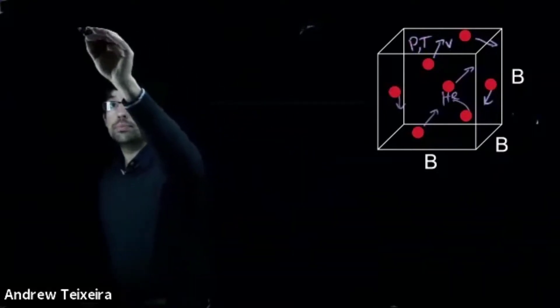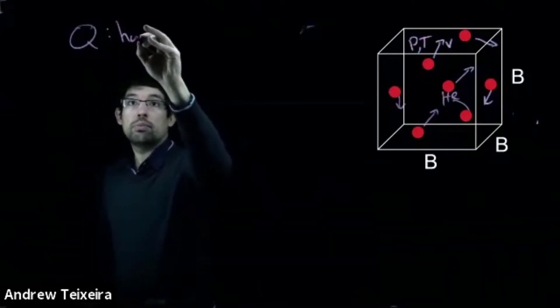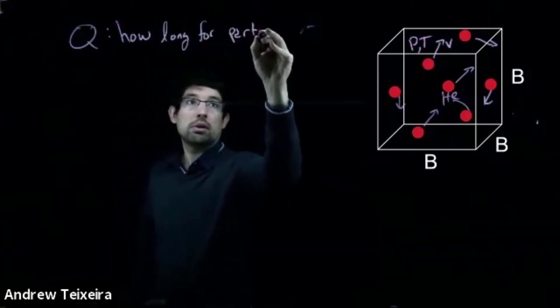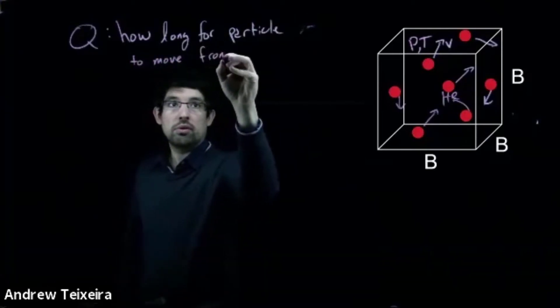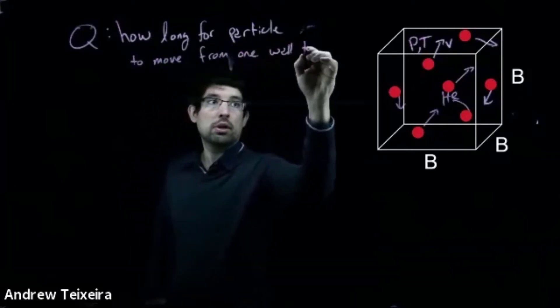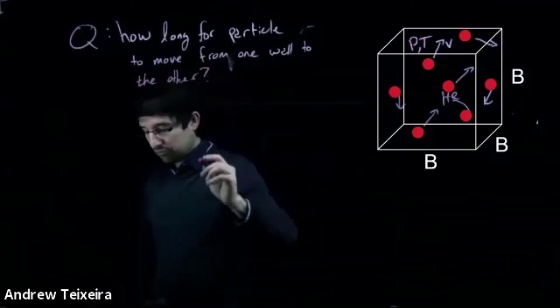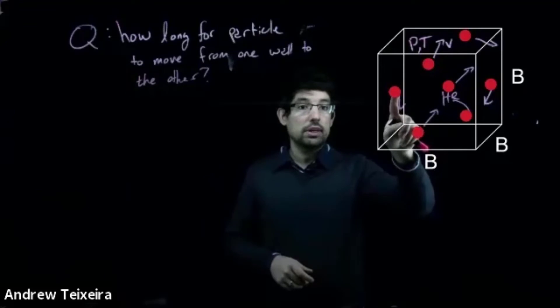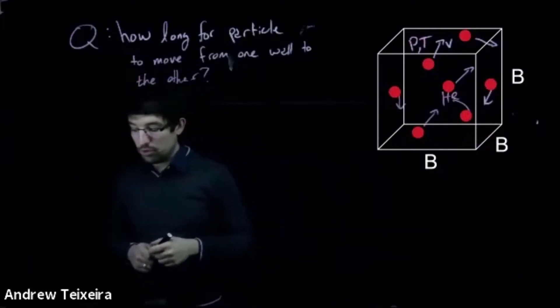The question I want to ask you is, how long would it take for a particle to move from one wall to the other? So what I'm really saying is, this molecule over here, or this atom over here, how long would it take for it to zip all the way across that cube of length B?